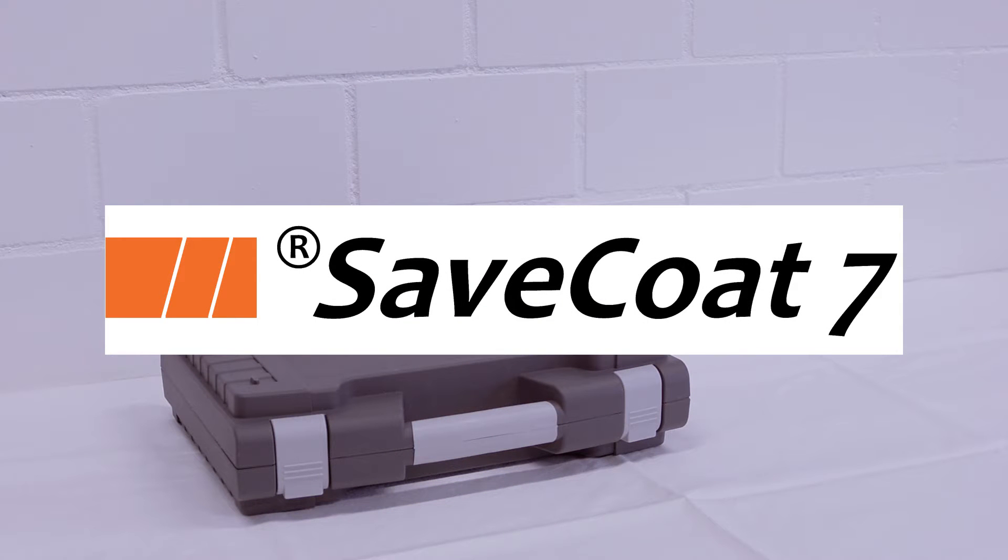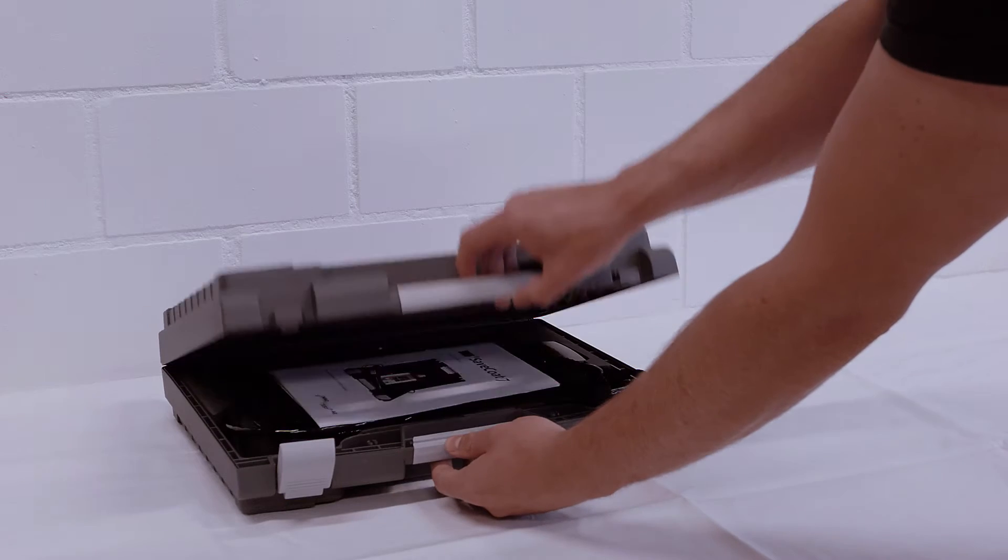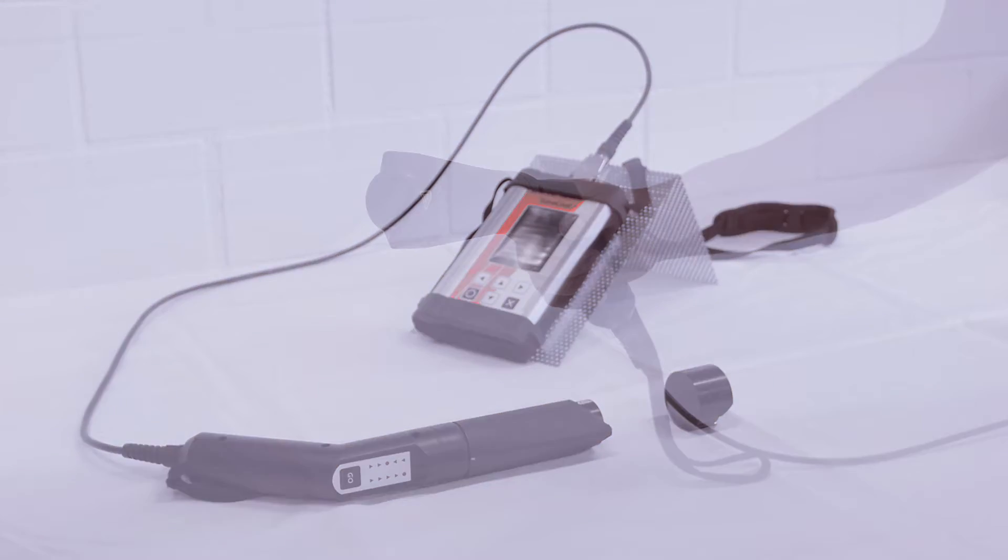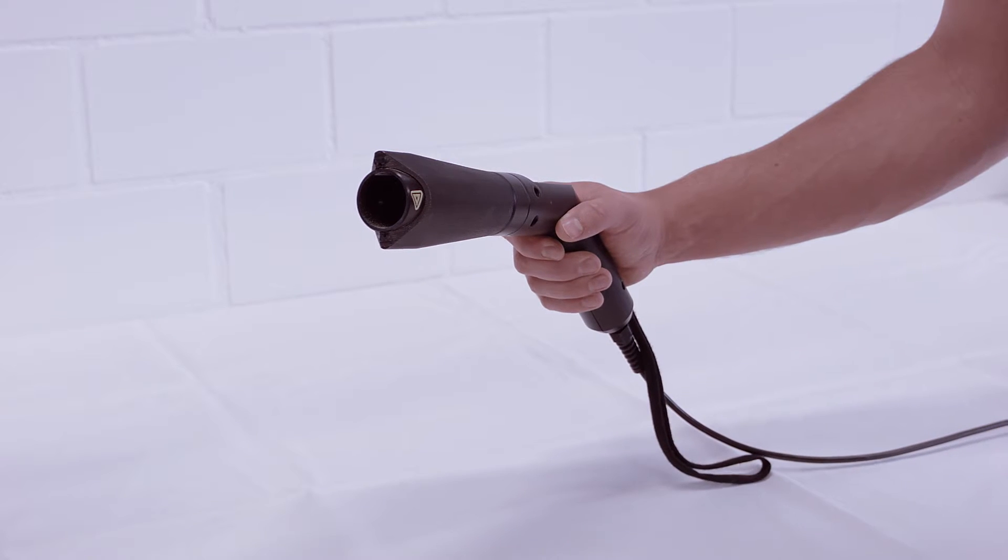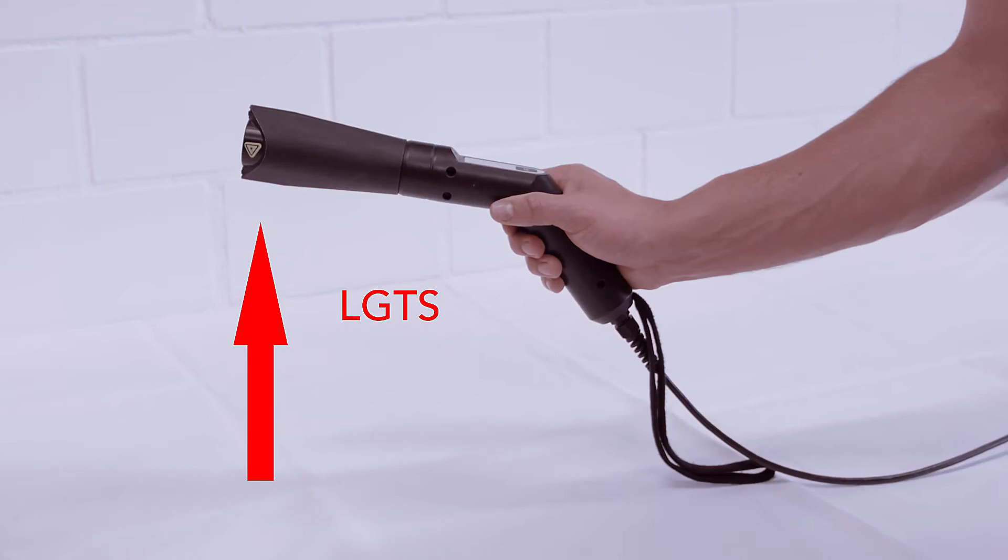SafeCode 7 comes with or without the LGTS. This new option has an extra optical distance guiding and targeting system based on laser technology which makes the measurement much easier, faster and in relation to the measurement position more reliable.